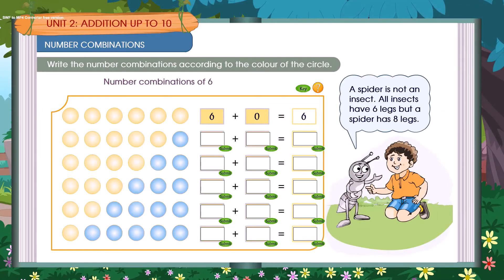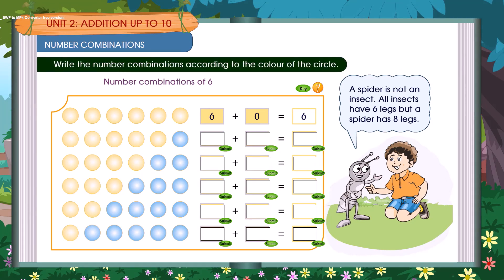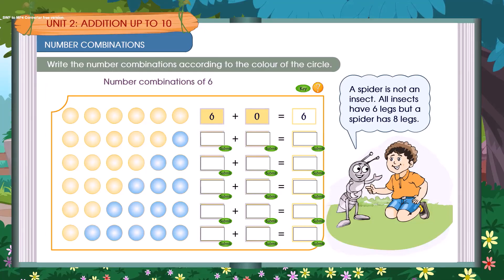A spider is not an insect. All insects have six legs but a spider has eight legs. Write the number combinations according to the color of the circles. Number combinations of six.